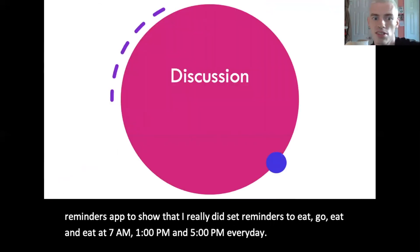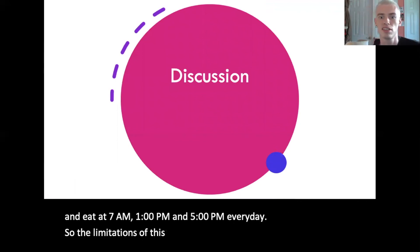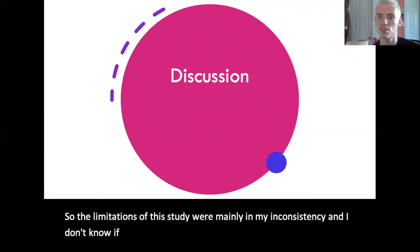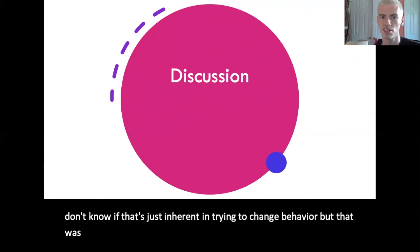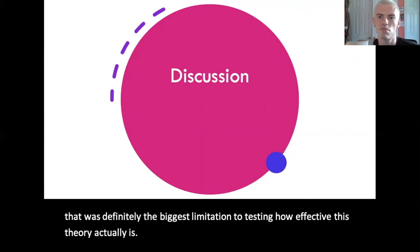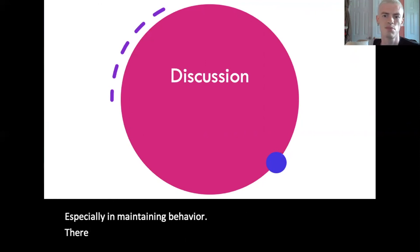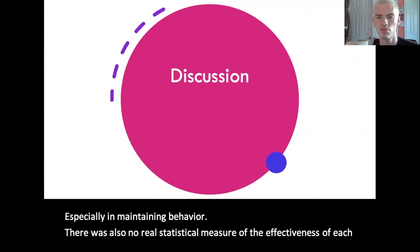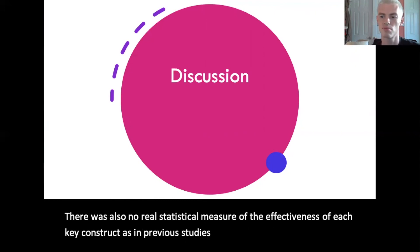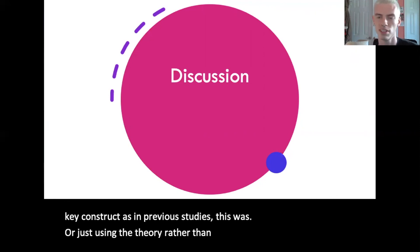The limitations of this study were mainly in my inconsistency. I don't know if that's just inherent in trying to change behavior, but it was definitely the biggest limitation to testing how effective this theory actually is, especially in maintaining behavior. There was also no real statistical measure of the effectiveness of each key construct — this was more just using the theory rather than looking at its validity.